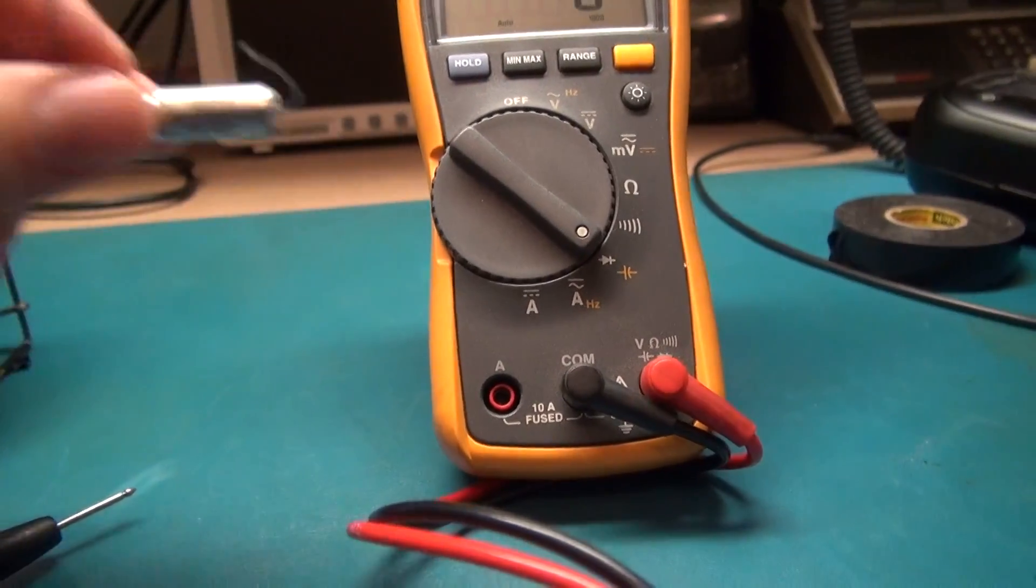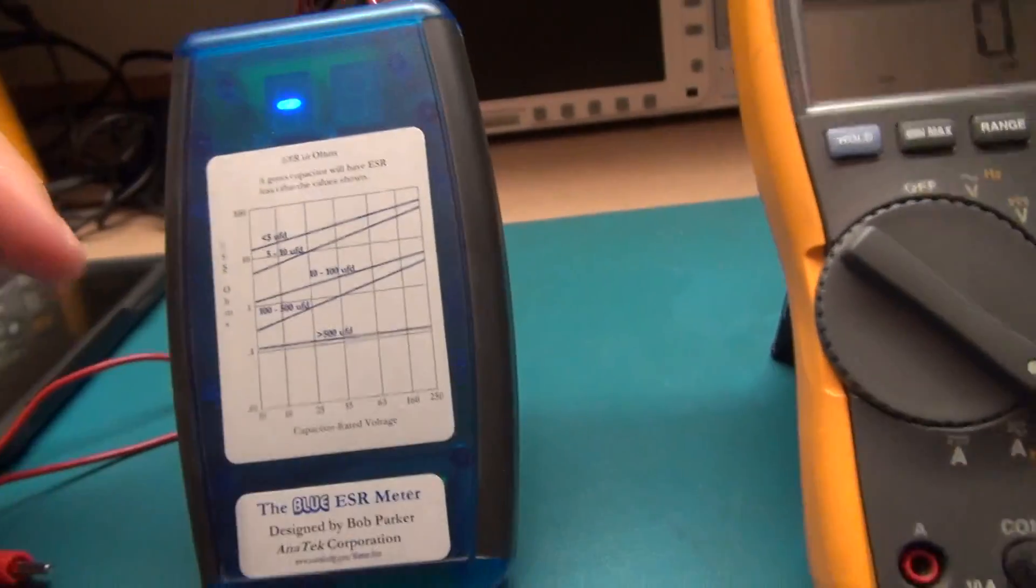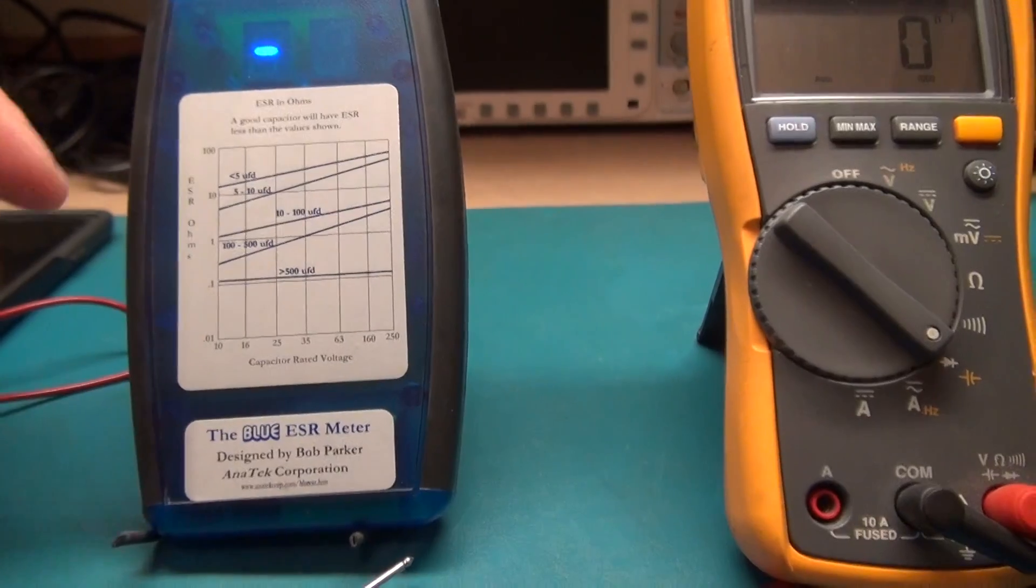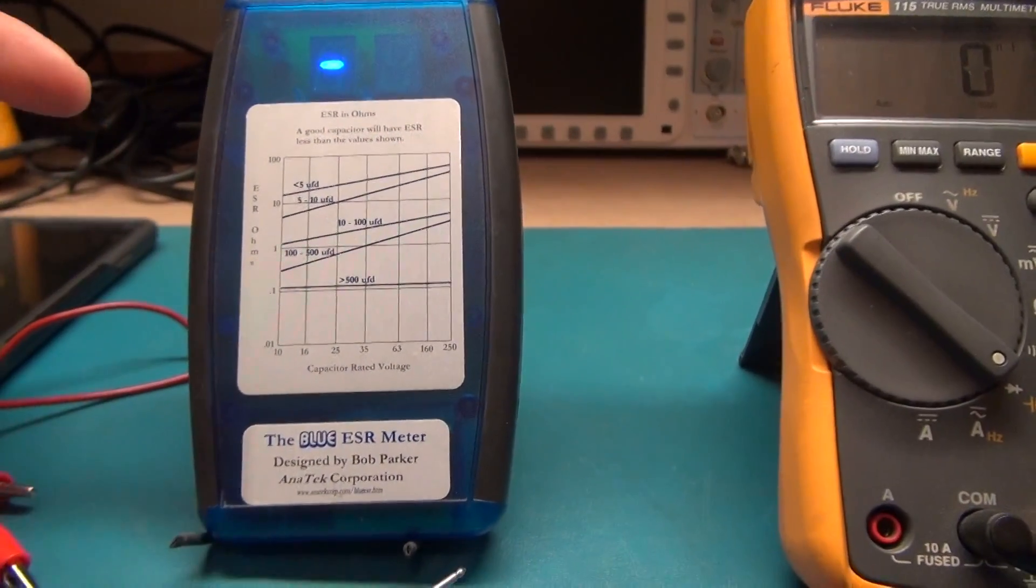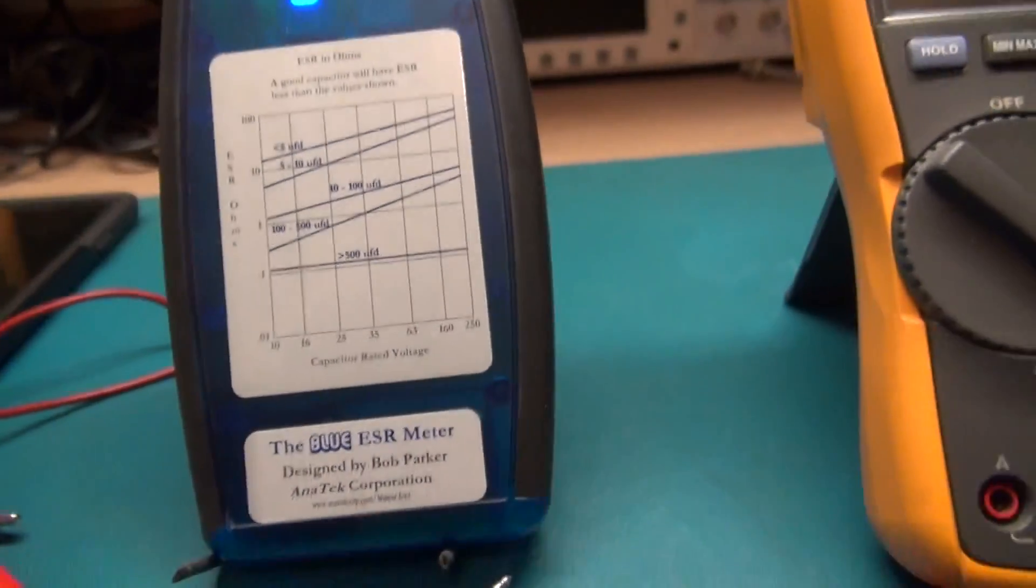Basically, I have the blue ESR meter, Bob Parker. It was a kit you can assemble for roughly around 100 bucks. You can get these almost anywhere on eBay or Amazon or anywhere like that.